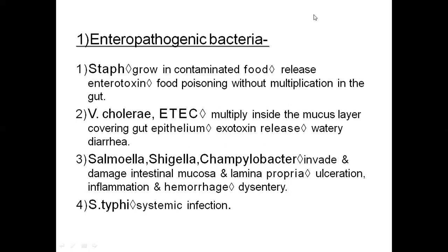Enteropathogenic bacteria cause internal toxic secretions. The first type is Staphylococcal species, which grow in contaminated food. They release enterotoxin that initiates activity at the infection site. This causes food poisoning without multiplication in the gut — the toxin is pre-formed in the food and causes poisoning even without bacterial multiplication inside.